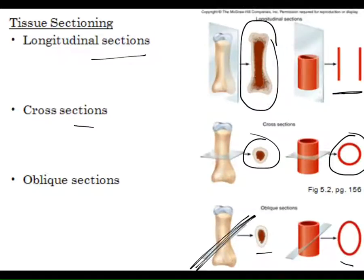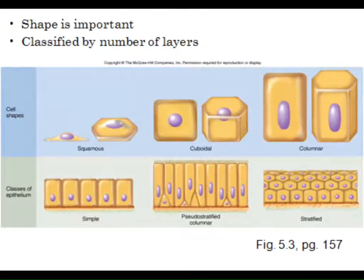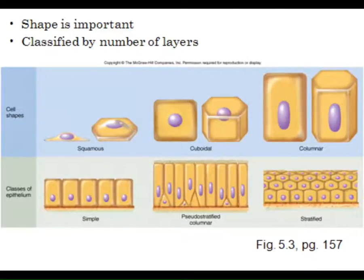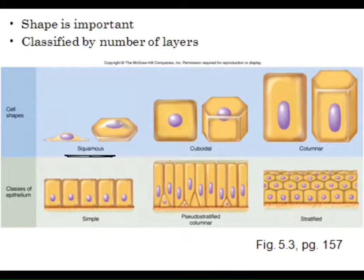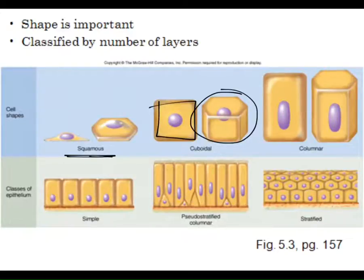Epithelial tissues are named using two words: one deals with the shape of the cells, one deals with the layers within the tissue. There are three basic cell shapes: squamous — flattened cells; cuboidal — square in two dimensions but truly cuboid in three dimensions; and columnar — taller than wide, more rectangular in two dimensions.